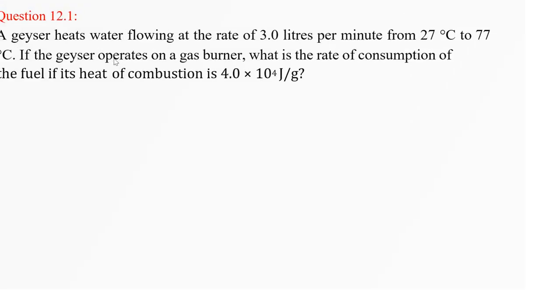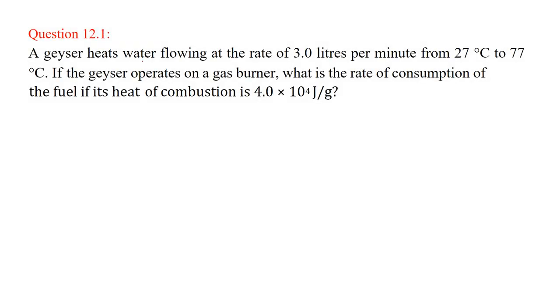We are taking question and answer on thermodynamics. A geyser heats water flowing at the rate of 3 liters per minute from 27 degree centigrade to 77 degree centigrade. The difference is around 50 degrees and this is the flow rate. If the geyser operates on a gas burner, what is the rate of consumption of fuel if its heat of combustion is this much?